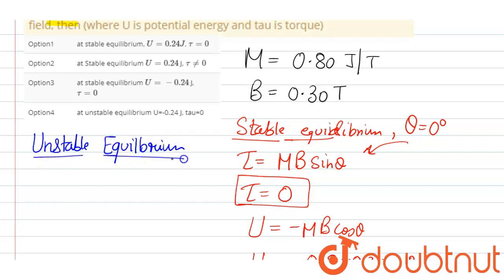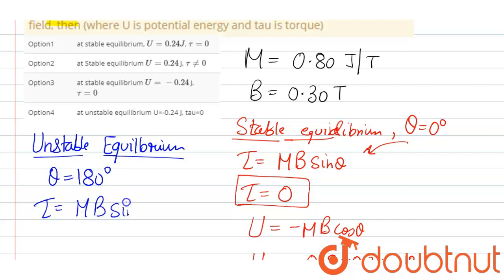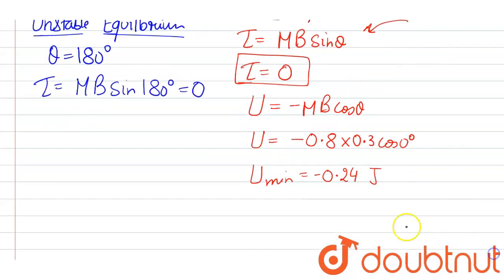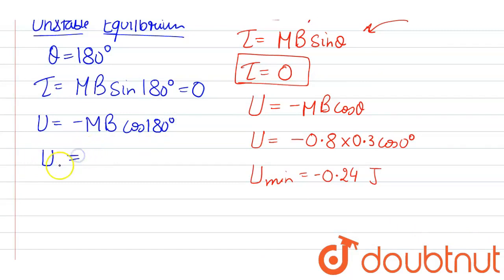For unstable equilibrium, theta will be 180 degrees. So the torque will again be 0 because it is MB sin 180° and sin 180° is 0. Whereas the potential energy is written as minus MB cos 180°. Since cos 180° is minus 1, it will be maximum energy, that is plus 0.24 joules.